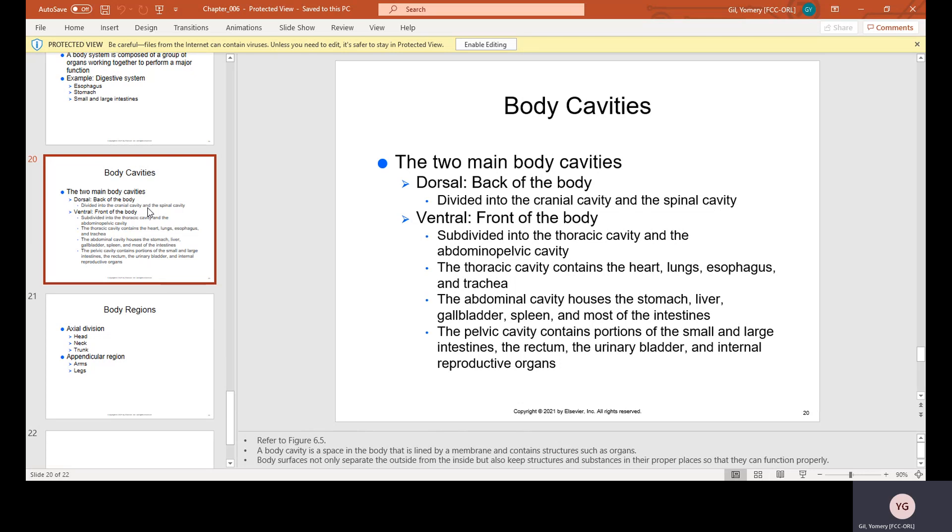Body cavities. The two main body cavities are the dorsal, which is the back of the body and is divided into the cranial cavity and the spinal cavity, and then the ventral, which is the front of the body. It's subdivided into the thoracic cavity and the abdominal pelvic cavity. The thoracic cavity contains the heart, the lungs, the esophagus, and the trachea.